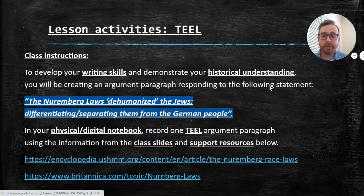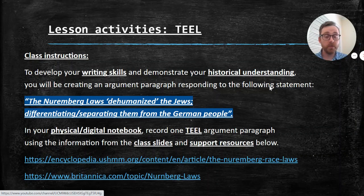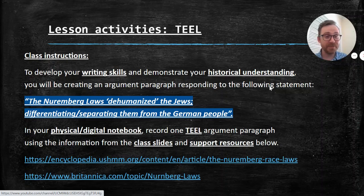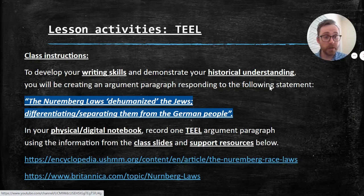What we're going to be doing today is a little writing task. It needs to occur at some point during the curriculum — we need to practice writing so that when you get into assessments, you know what you're doing. The good thing about doing these humanities electives is that you're also getting help for your English subject; they're very similar transferable skills you'll need in VCE. To develop your writing skills and demonstrate your understanding of this topic, you'll be creating just a single argument paragraph.